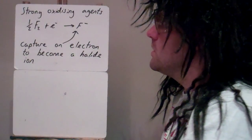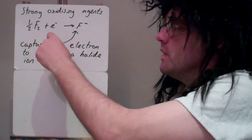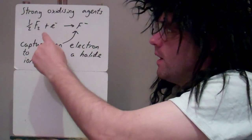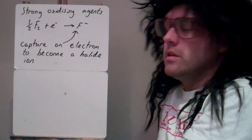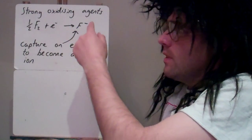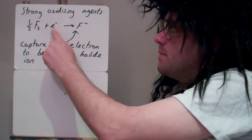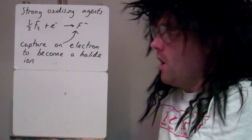Halogens are strong oxidising agents, so they have a strong ability to accept an electron, and they go from halogens to halides. When they capture the electron, they become a halide. So we've got half a mole of fluorine, accept an electron, become a fluoride ion.